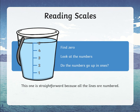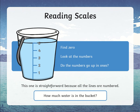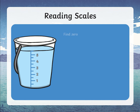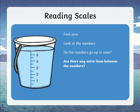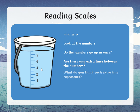Some scales don't actually have numbers. How much water is in the bucket? I would probably say five litres. Remember to look at the zero, look at the numbers, and look at how the numbers go up. Also notice any extra lines in between, because they mean half of that value. So in between one and two is one and a half; in between two and three is two and a half. Think about what they represent and then you can test it by counting up.